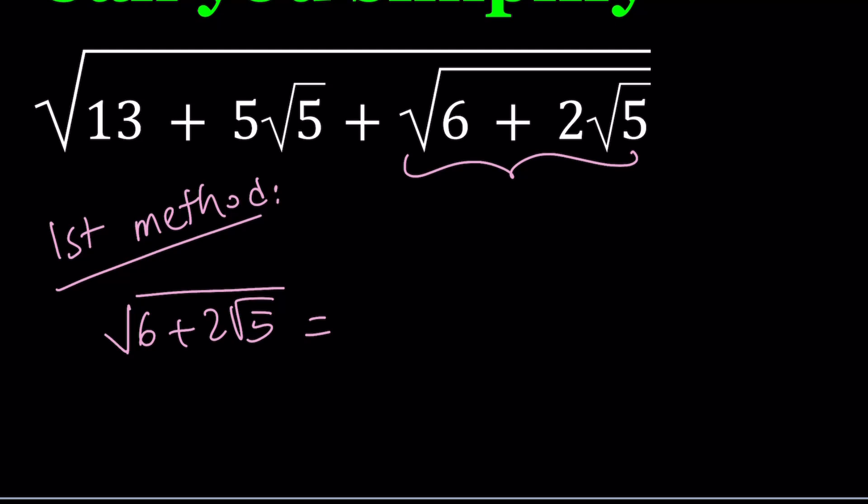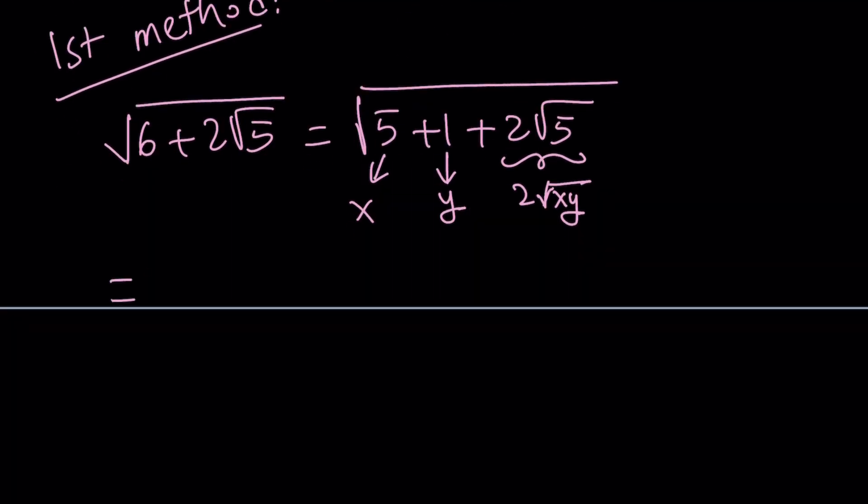and 5 is 5 times 1. So we can go ahead and write this as the square root of 5 plus 1 plus 2 times the square root of 5. And if you think about this very carefully, if you kind of like call this x and call this y, x times y is going to go inside the radical. So this part is just going to be 2 times the square root of x, y. And guess what? This is equal to the square root of x plus y plus 2 times the square root of x, y. Maybe I'll write it this way because that's more standard. x plus 2 square root of x, y plus y.